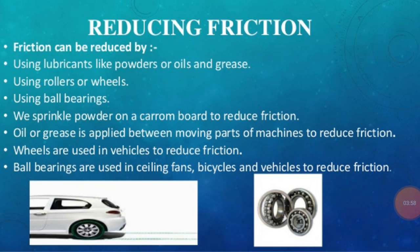The substances which reduce friction are called lubricants. Oil, grease, graphite, and fine powder are all examples of lubricants. The applying of lubricants such as oil and grease to a machine is known as lubrication. A lubricant, like oil, reduces friction by helping surfaces slide over each other smoothly. Thus, friction can be reduced by lubrication because it helps surfaces slide over each other smoothly.